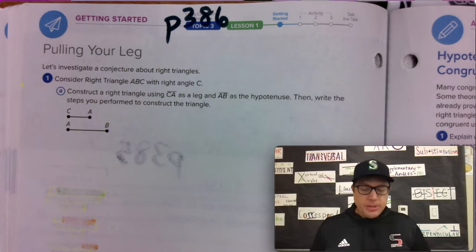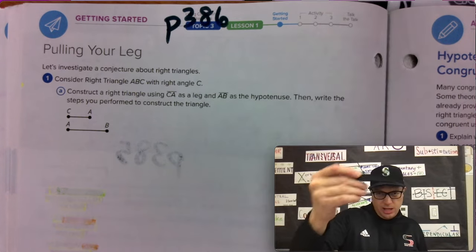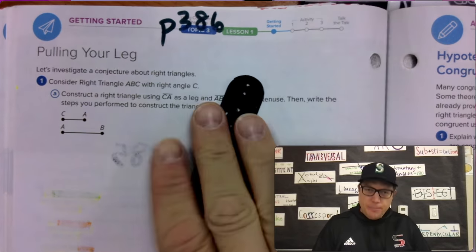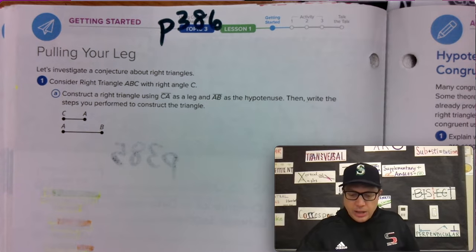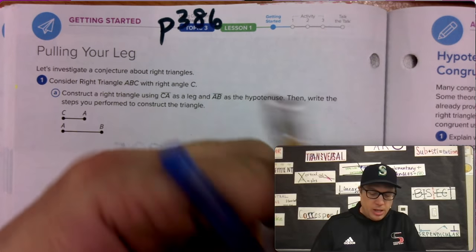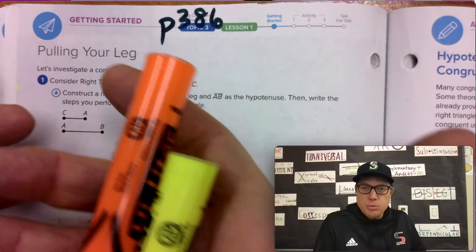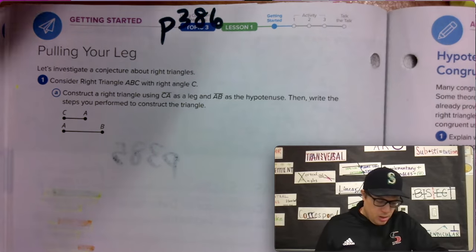386. Page 386, everyone. Please make sure you have a protractor, straight edge. I'm going to use this compass that I 3D printed, but use a compass. That's what this is meant to be. I have something to write with, something to write on, and of course, do math and color. Have some highlighters. Let's go.